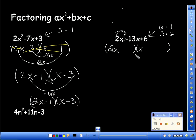6 and 1 or 3 and 2. Okay, so let's try. Which one do you want to try? 6 and 1. Let's try it this way. Okay, let's see if it works. I get 2x and 6x. That's not going to work. Okay, so we'll try this.